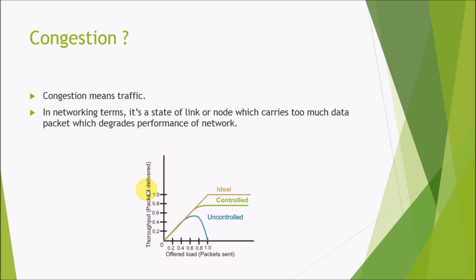So now we will see what is congestion. In real time, congestion means traffic. What will happen if a number of vehicles come together on a single road? It will be very difficult for them, so we call it traffic. Similarly, in networking terms, it's a state of a link or a node which carries too many data packets, which degrades the performance of the network. That is, if a number of packets travelling come at a single link or point which exceeds its capacity, then congestion will occur.